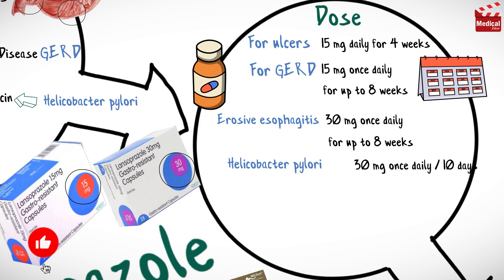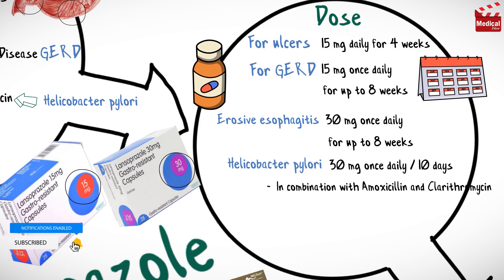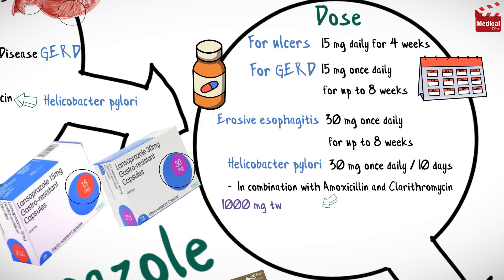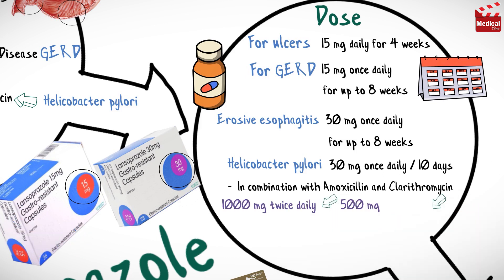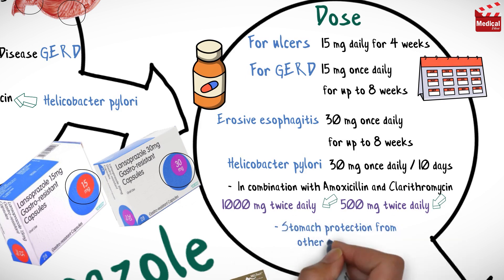Helicobacter pylori is usually treated with 30 milligrams once daily for 10 days, in combination with amoxicillin 1000 milligrams twice a day and clarithromycin 500 milligrams twice daily. For stomach protection from other medications, 15 to 30 milligrams daily.